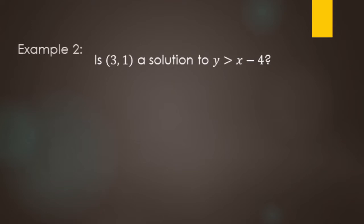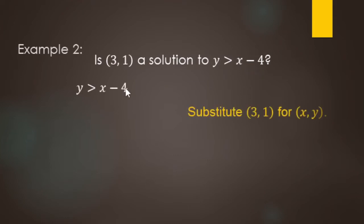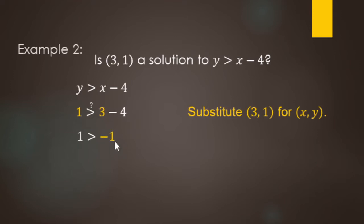For this example, we're checking to see if (3, 1) is a solution to y is greater than x minus 4. We substitute 3 in for x and 1 in for y. Using order of operations, 3 minus 4 is negative 1. In this case, 1 is indeed greater than negative 1 — that's a true statement. So (3, 1) is a solution to this inequality.